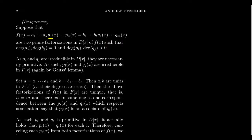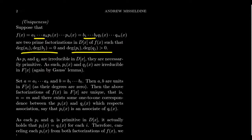Each polynomial Pᵢ and Qⱼ can be assumed to be non-constant polynomials of degree greater than zero, while the Aᵢ and Bⱼ are elements of D, i.e., constant polynomials of degree zero. The P's and Q's are primitive polynomials over D[X] because they're irreducible. By Gauss's lemma, Pᵢ(X) and Qⱼ(X) must also be irreducible over F[X]. The factorization over D[X] essentially coincides with the factorization over F[X], and other factorizations in F[X] can always be pushed back onto D[X].